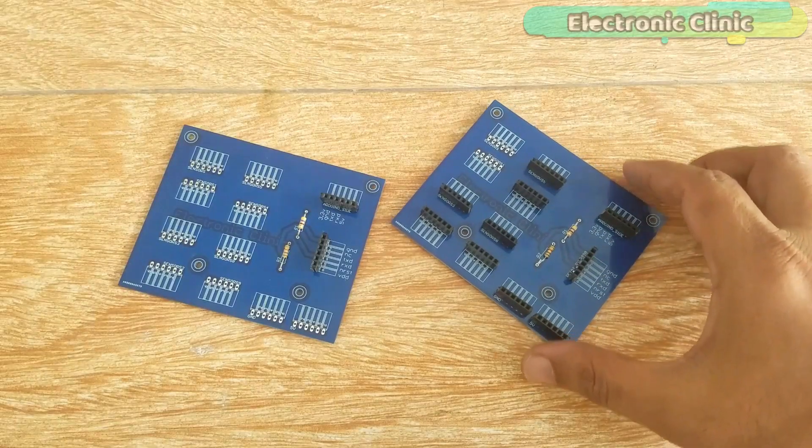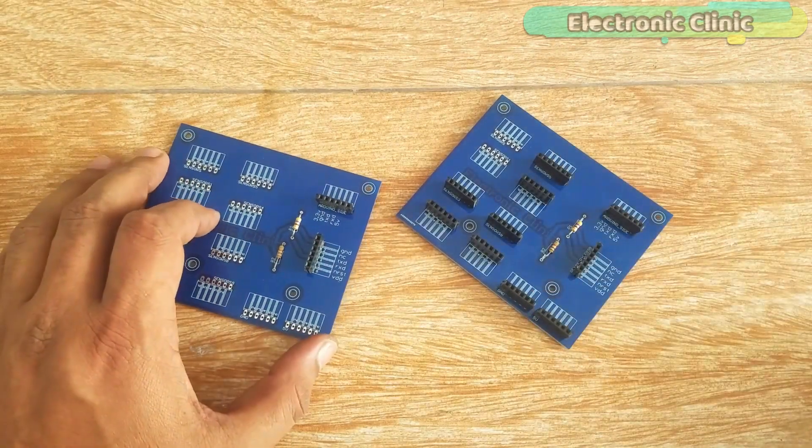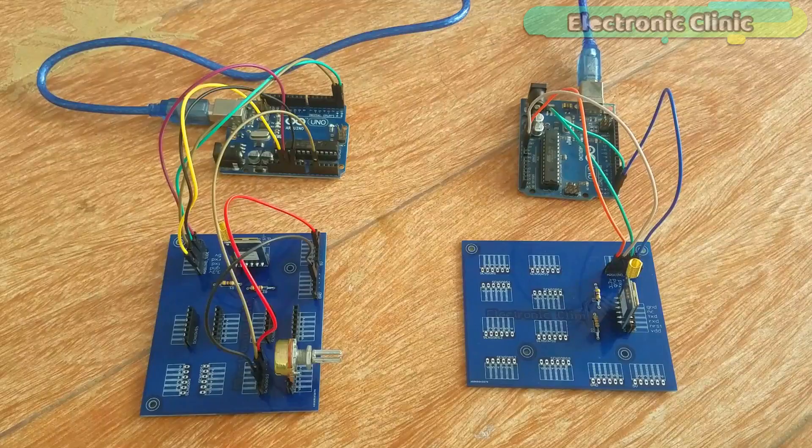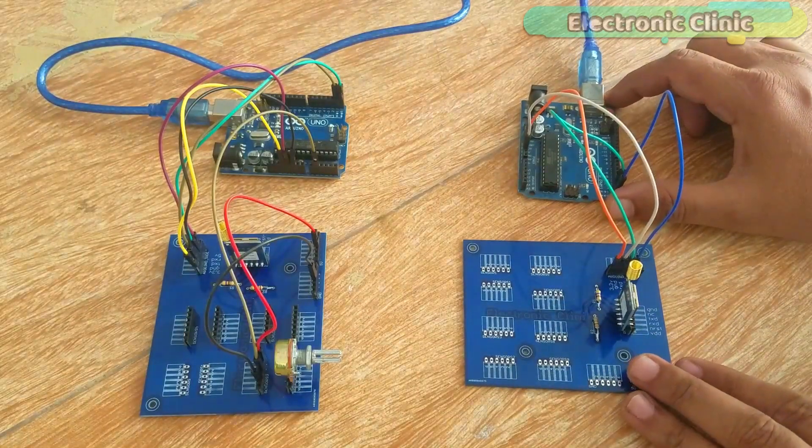As you can see I am done with the soldering. This is the transmitter side PCB and this one is the receiver side PCB. All the connections are done as per the circuit diagram which I have already explained.